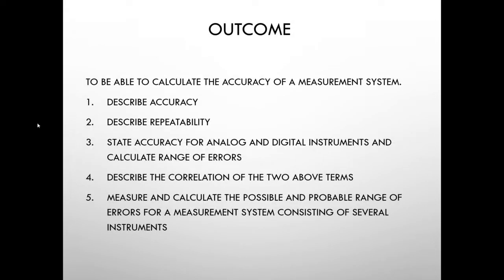In this ILM, we will be able to calculate the accuracy of a measurement system. We'll start by describing what accuracy and repeatability are, stating accuracy for analog and digital instruments, and calculating ranges of errors based on accuracy statements. We'll describe the relationship between accuracy and repeatability, and then the last objective deals with measuring and calculating the possible and probable range of errors for a measurement system consisting of several instruments — from a transmitter to a valve and processor — all of which have the potential to introduce errors.